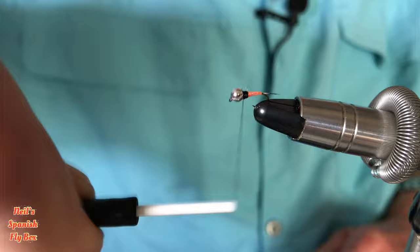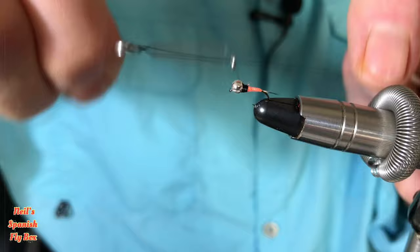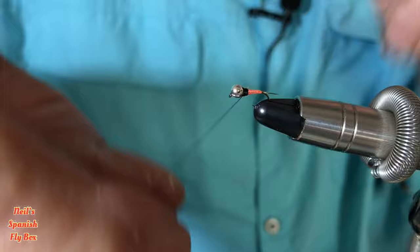Just tie that off and trim off the black thread. See the fiber there. See if I can get rid of that.